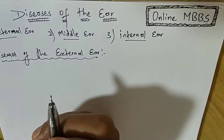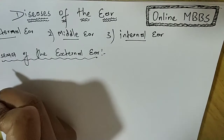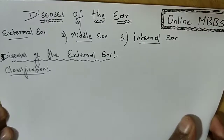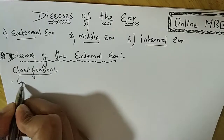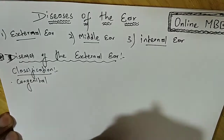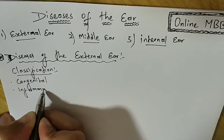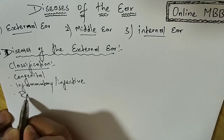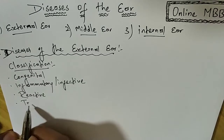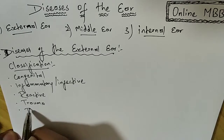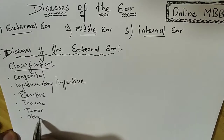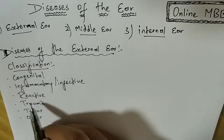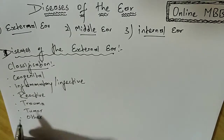The diseases of the external ear are classified according to the following six categories: congenital, inflammatory or infective, reactive, traumatic, tumour, and others. The diseases of the external ear are categorized according to these six conditions.